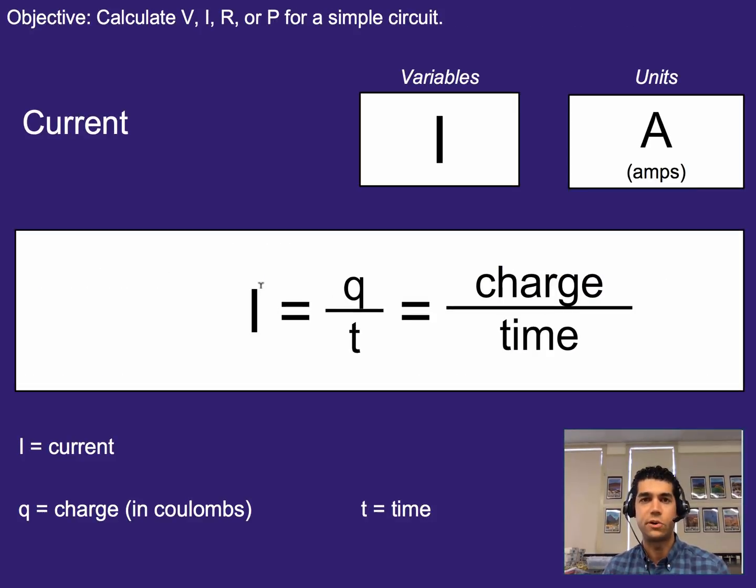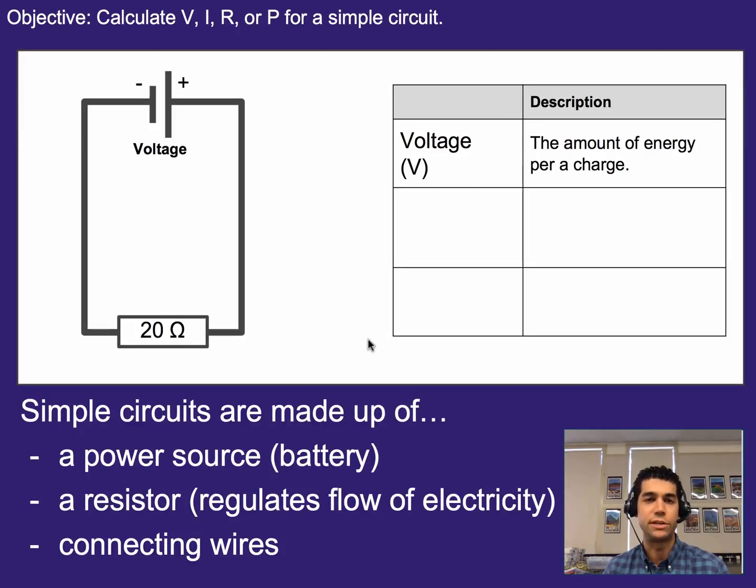Now if we want to calculate current on its own, we can use this formula, so just FYI on that, where we just take charge divided by time, but that's not going to be our focus today. Our focus is going to be the relationship between voltage, current, and resistance.